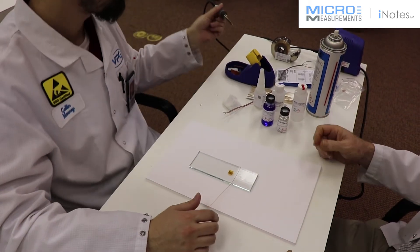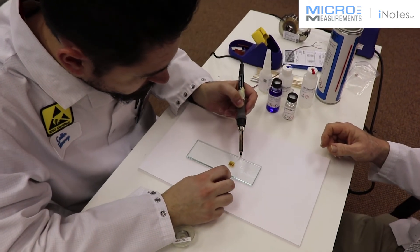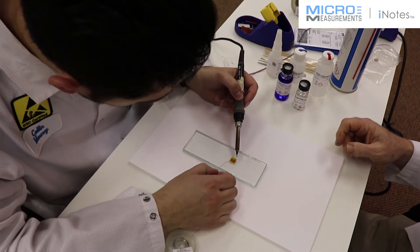So Colin's going to clean the tip, lightly tin the tip, place the solder in the target area, and add fresh solder and flux as he presses it down.